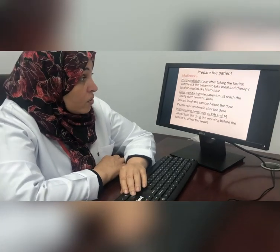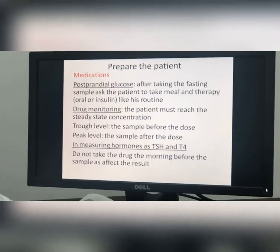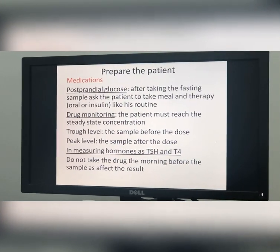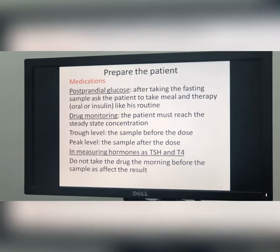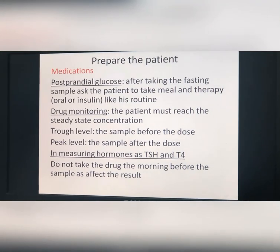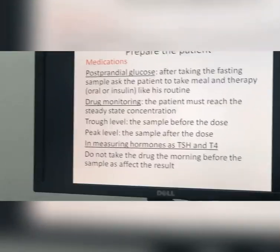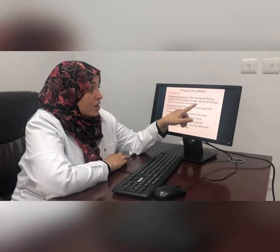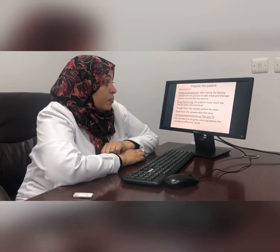To continue preparation of the patient, we should talk about medication. If we are going to measure post-prandial glucose, you should teach your patient that after taking the fasting sample, they should take a meal and their therapy — oral or insulin as routine. Don't just tell them to fast for 8 hours, take the fasting sample, then eat and come for the post-prandial sample. You should teach them to take their meal and therapy before taking the two-hour post-prandial sample.